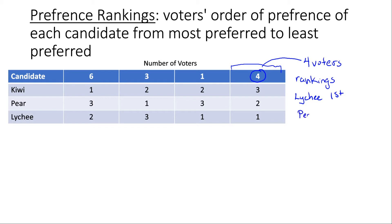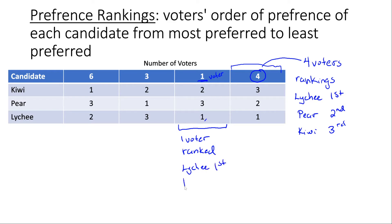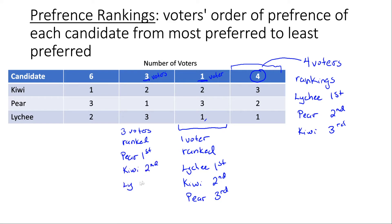Those four voters ranked Pear second and Kiwi third. In the second column we have one voter — Lychee is ranked first, Kiwi is ranked second, and Pear is ranked third. In the next column we have three voters: they ranked Pear first, they ranked Kiwi second, and they ranked Lychee third.